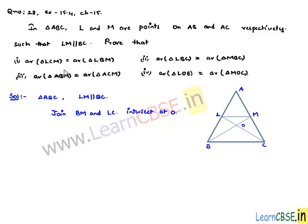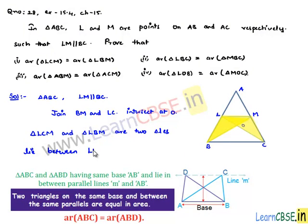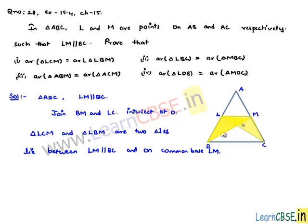For the first proof, we need to prove that area of triangle LCM is equal to area of triangle LBM. Triangles LCM and LBM lie between the parallel lines LM and BC, on the common base LM. Therefore, area of triangle LCM is equal to area of triangle LBM. This is the first proof.